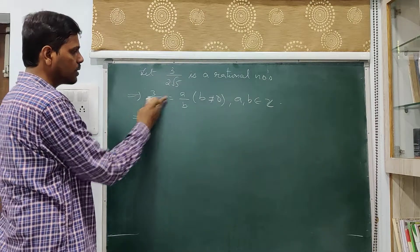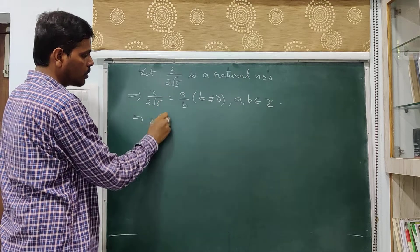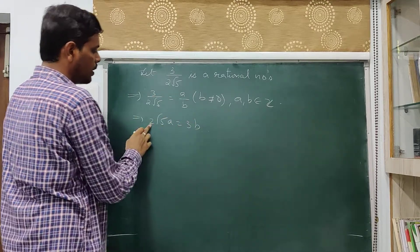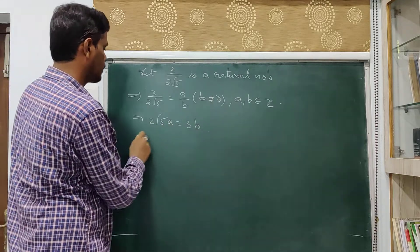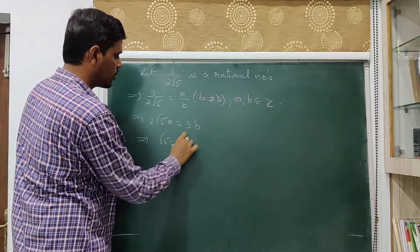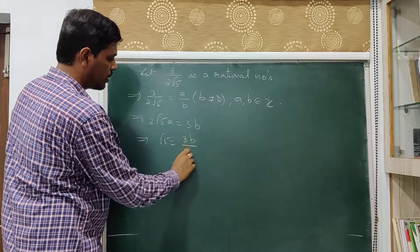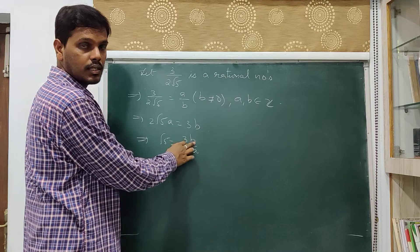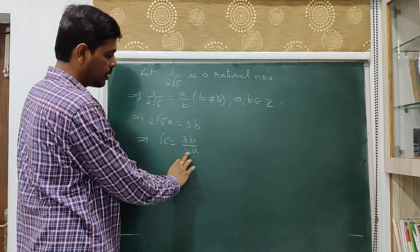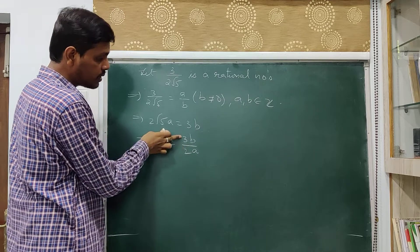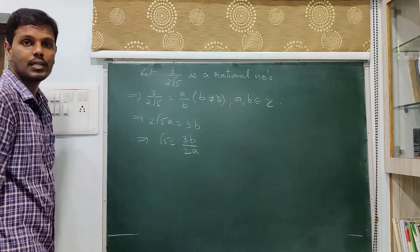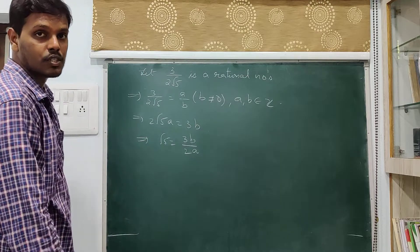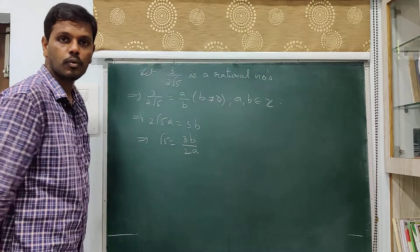Cross multiplying gives 2√5·a equals 3b. Bringing 2 and a to the other side: root 5 equals 3b by 2a. Here 3 is an integer, b is an integer — product of two integers is an integer — and likewise 2a is an integer. So this is integer divided by integer, which is a rational number. But root 5 is irrational — we have already proved it.